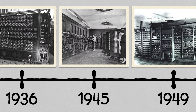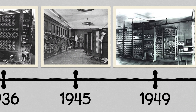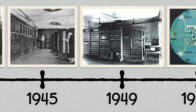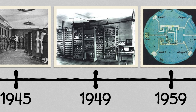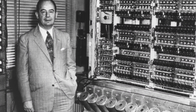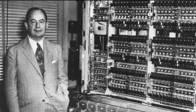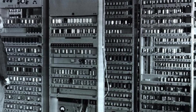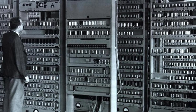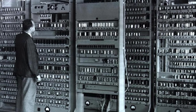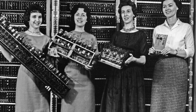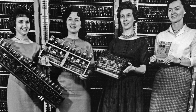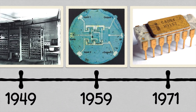Thankfully, this technology didn't last long, and in 1949, just four years later, the EDVAC, an improvement of the ENIAC, was built and used transistors instead of vacuum tubes. Therefore, the EDVAC was considered the first binary computer.